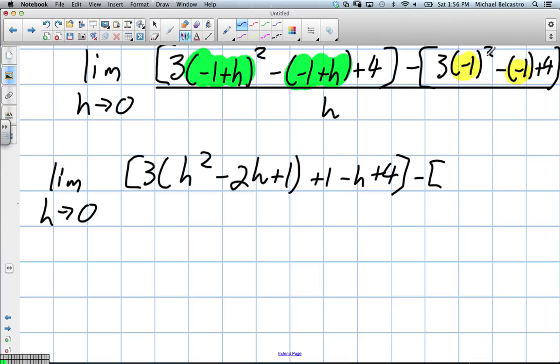Distributing negative. Okay. So negative 1 squared is positive 1. So that's 3. This will become plus 1. So 3 plus 1 plus 4? 8. We already knew that answer from before, right? All above h. Okay, great.